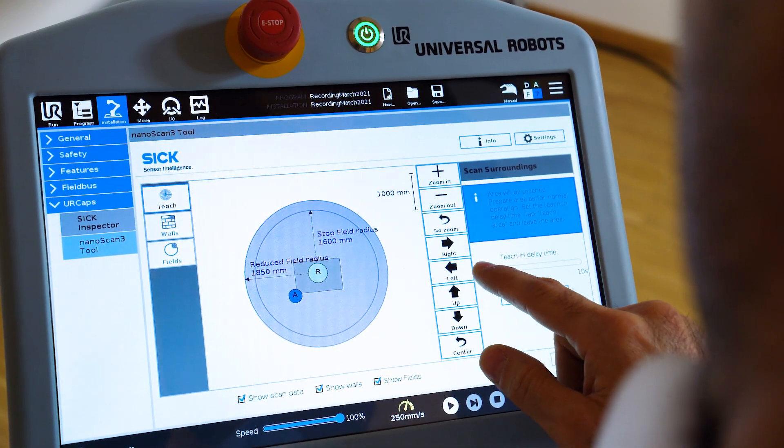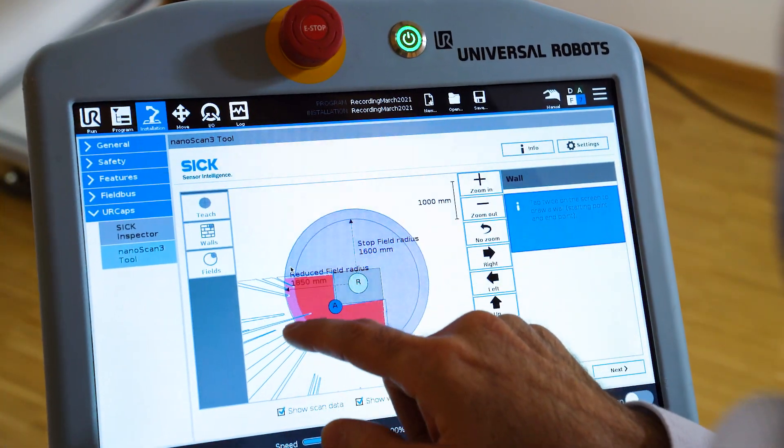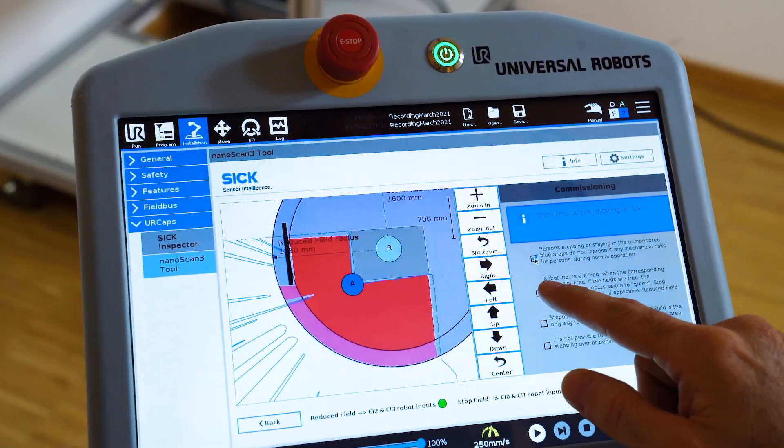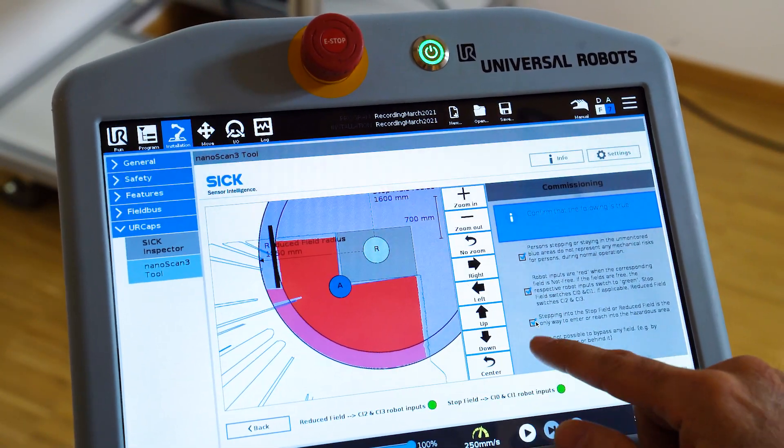The NanoScan3 tool UR Cap is a simple, user-friendly graphic user interface for commissioning, diagnosis, verification, and report generation. This makes the configuration of the safety laser scanner easy and fast.